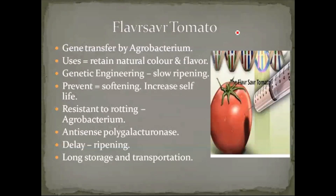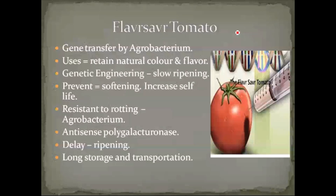Suppose if our mother bought some tomato fruits and tried to store them for a longer time, we cannot store them. If you take the tomato fruit after one week, we can see the bottom may be over-ripened and juice will come out from the fruit. The juice starts to come out because of storage. So for storing tomato fruits for a longer time and to maintain the solid state of a tomato fruit, we are creating transgenic tomatoes. The transgenic tomatoes are called Flavor Saver Tomatoes.